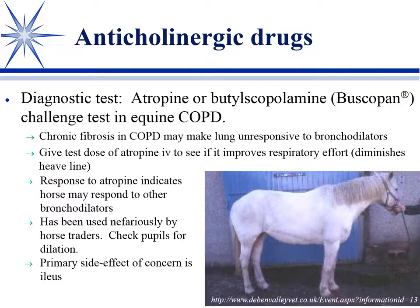Where anticholinergics have a niche role is in diagnostic testing. Atropine is used for this, and I also recently looked up buscopan - butylscopolamine - which is a muscarinic antagonist like atropine but tends to have fewer side effects. It's actually approved in horses for spasmodic colic, so it might work in this diagnostic context as well.